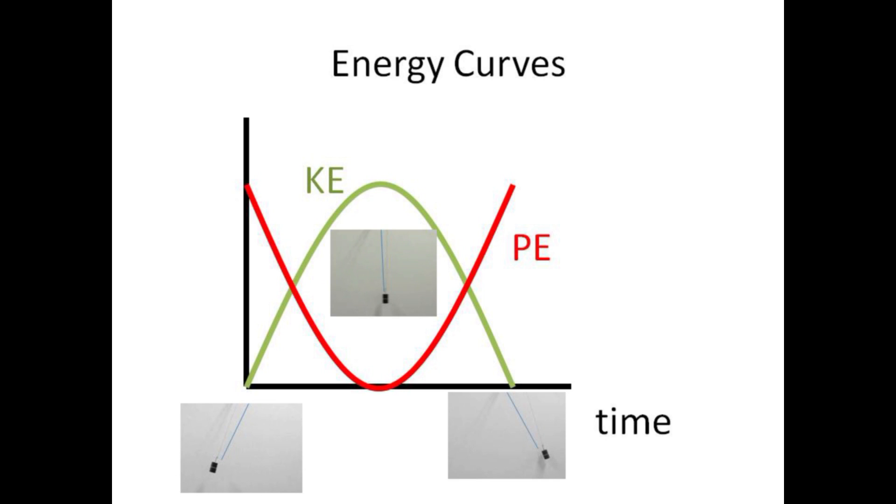A plot of potential energy shows just the opposite, with the height, which is proportional to potential energy, maximum at the two extremes of the motion. The total energy, which is the sum of kinetic plus potential, should remain constant, however, throughout the entire swing.